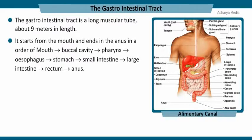The gastrointestinal tract starts from the mouth and ends at the anus in the following sequence: mouth, buccal cavity, pharynx, esophagus, stomach, small intestine, large intestine, rectum, and anus.